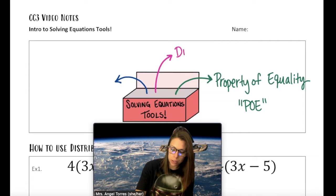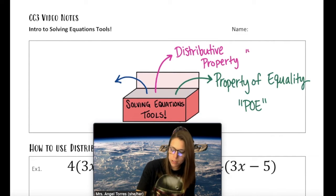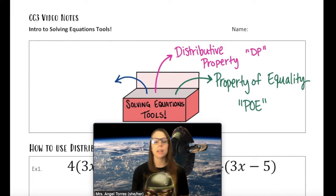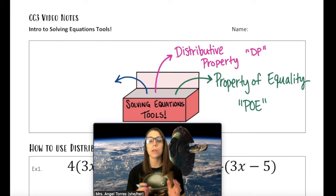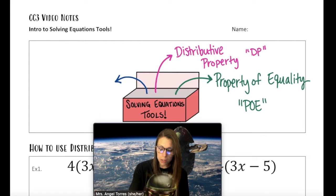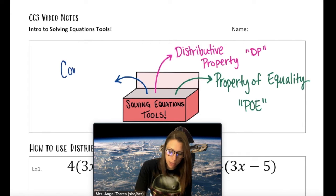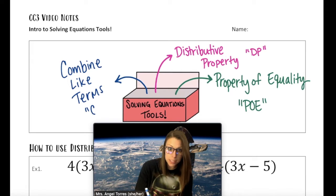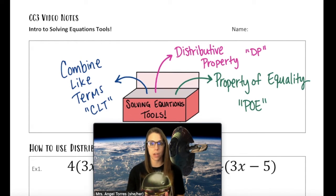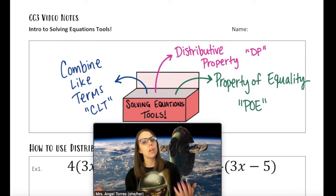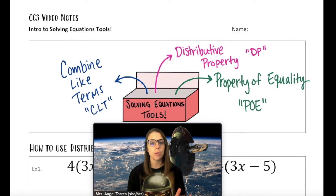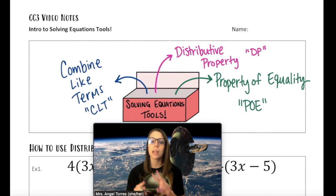We also have a tool called the Distributive Property, or DP for short. That's a tool we use on only one side of the equation. We also have another tool called Combining Like Terms, or CLT for short, which again is a tool we only use on one side of the equation. So before we get into solving equations with these tools, we're going to spend a little time going over the two new tools: Distributive Property and Combining Like Terms.